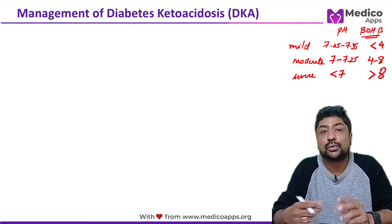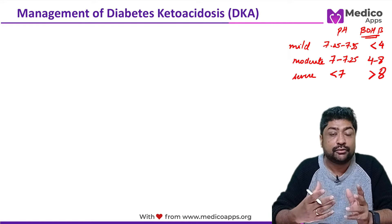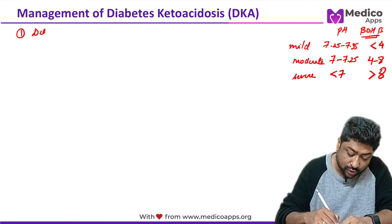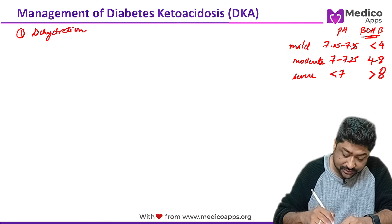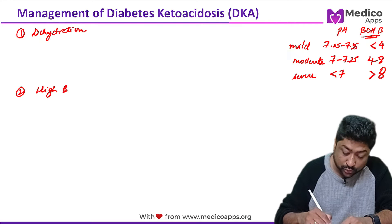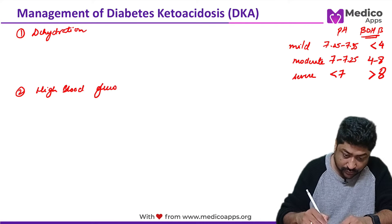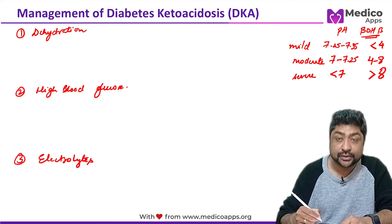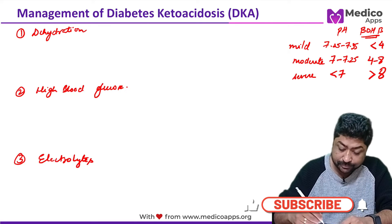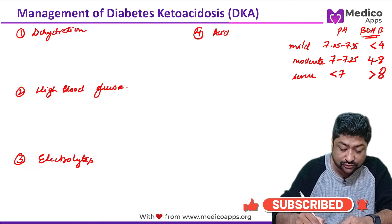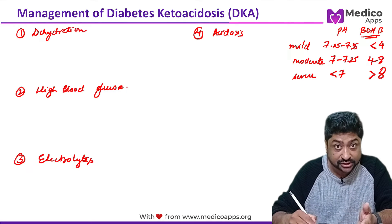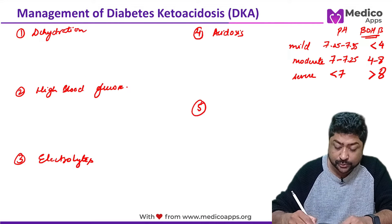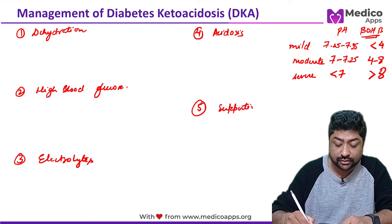Once classified, we look at the components of DKA management: first, managing the dehydration component; second, managing the high blood glucose; third, managing electrolytes, as there will be critical electrolyte changes during treatment; fourth, managing acidosis; and finally, supportive measures.